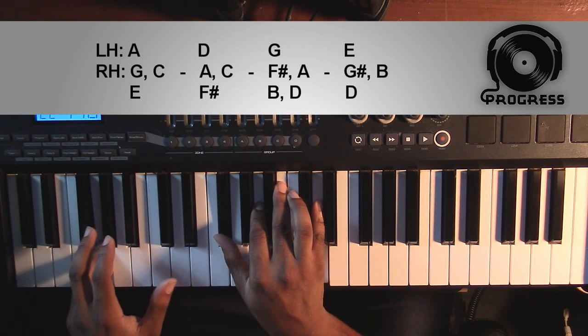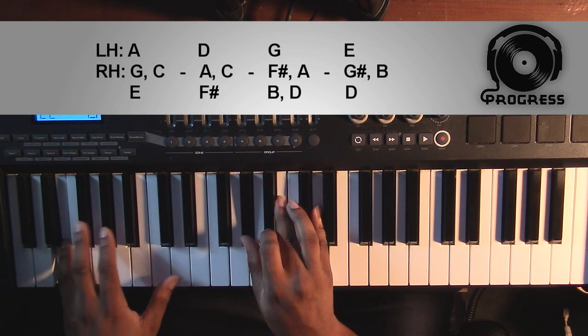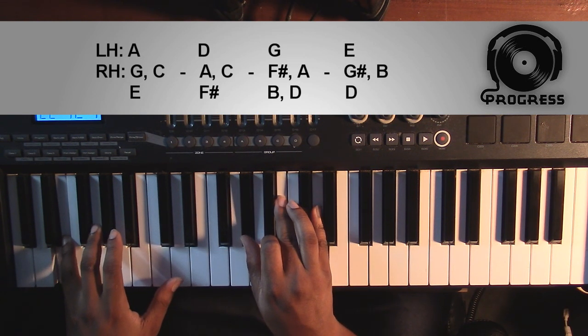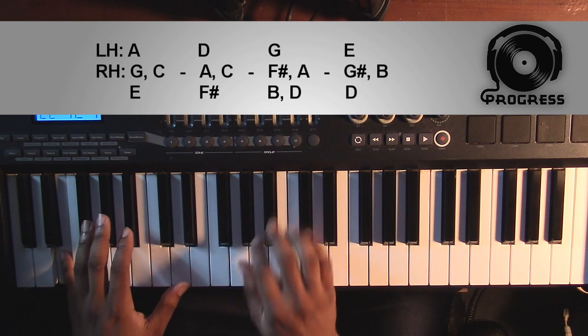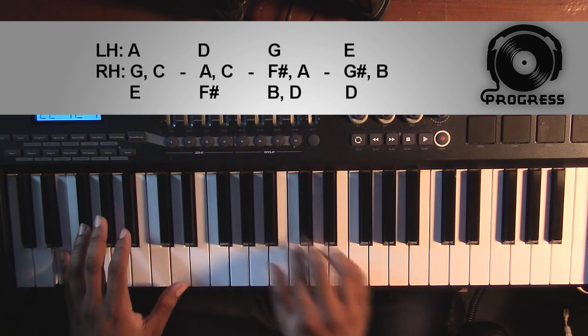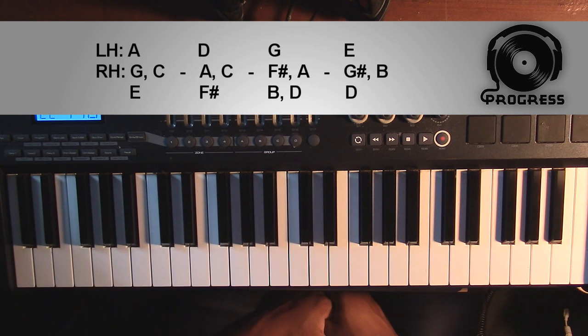Fourth chord in this first set is going to be an E7. You really have to move your hands. Left hand you'll have an E, right hand you'll have a G sharp, a B, and a D.